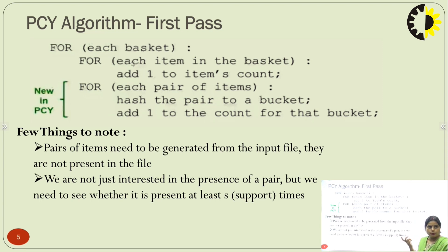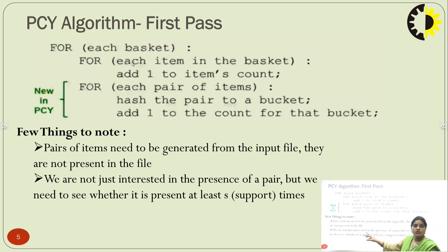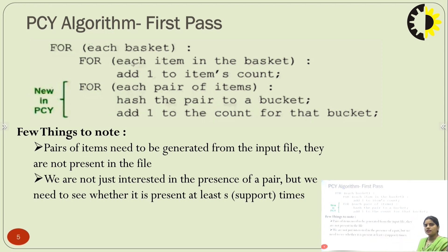Key points to note: the pairs of items need to be generated from the input file; they should not already be stored in the file. We are not just interested in the presence of a pair, but we need to check whether it meets at least the minimum support count. So we have to perform two checks.